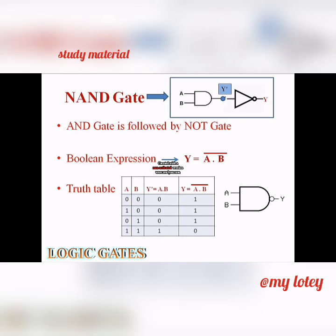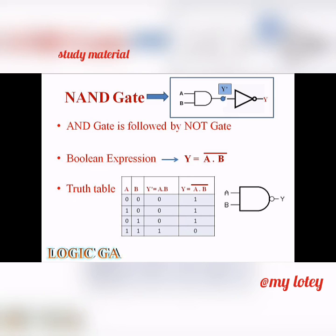The next gate is NAND gate. It is also a universal gate. In this type of gate, AND gate is followed by NOT gate. The boolean expression is y is equal to A into B bar. From the truth table, suppose A=0 and B=0 inputs are given to the AND gate. Then it produces an output y dash which is equal to A into B, that is 0. The output value y dash equal to 0 is then passed into the NOT gate which produces the resultant output value which is equal to complement of 0, that is 1. In the similar manner, we can get some other output values for NAND gate as shown in the truth table.